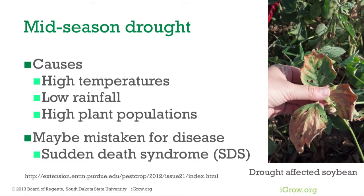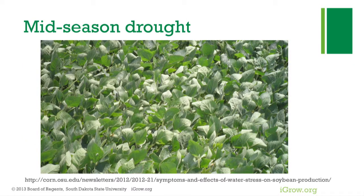Now moving into mid-season drought: you've had a good early season and the water shuts off around June 15th or so. The causes are high temperatures, low rainfall, and high plant populations — if you planted at the wrong population, you've used up moisture early. Mid-season drought can sometimes be mistaken for sudden death syndrome, so check the web to compare SDS versus drought symptoms.